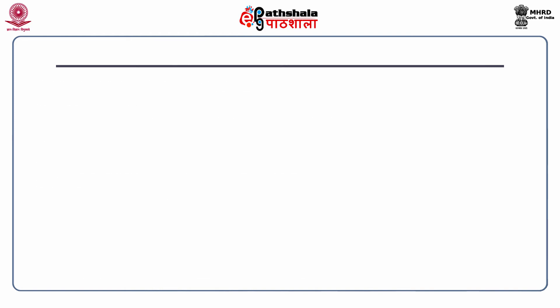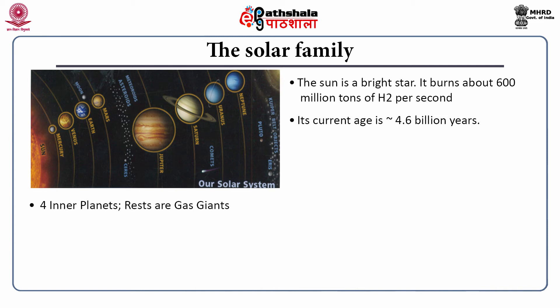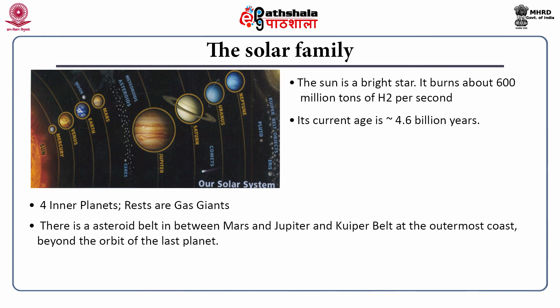The very important next topic is the solar family. The sun is the central star of the solar family. It burns about 600 million tons of hydrogen per second. Its current age is 4.6 billion years, and the nuclear fuel — hydrogen — remains in such quantity that it can survive for another 5 billion years. The 4 planets nearest to the sun are the inner planets: Mercury, Venus, Earth and Mars. The rest are gas giants. There is an asteroid belt between the orbits of Mars and Jupiter, and a Kuiper Belt and Oort Cloud at the outermost reaches of the solar system.